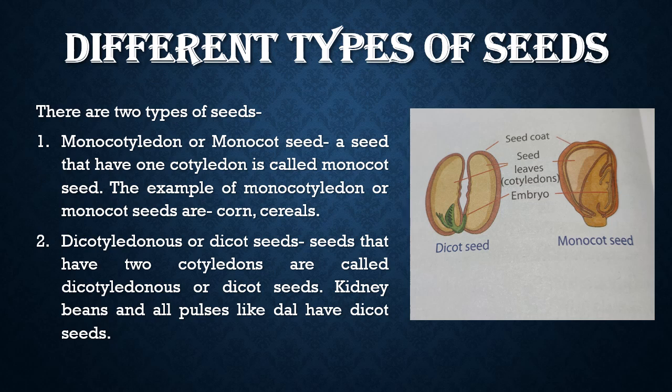There are two types of seeds. Number one: monocotyledon or monocot seed. A seed that has one cotyledon is called a monocot seed. Examples of monocotyledon or monocot seeds are corn and cereals.